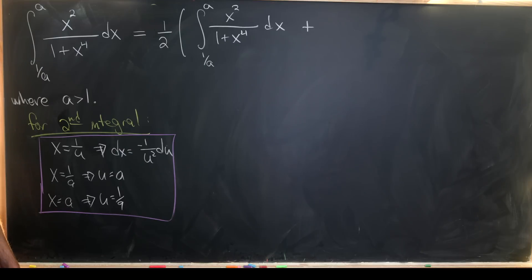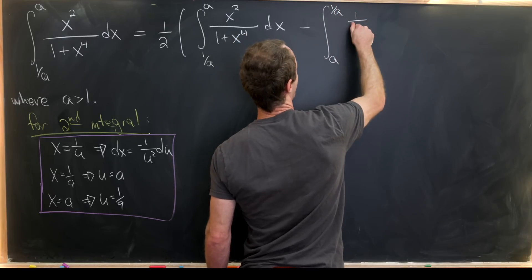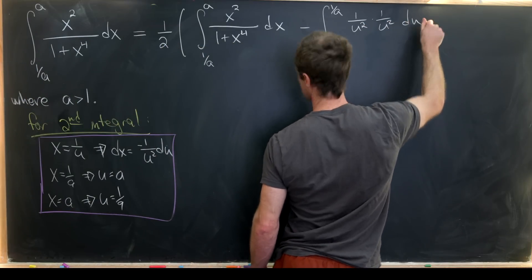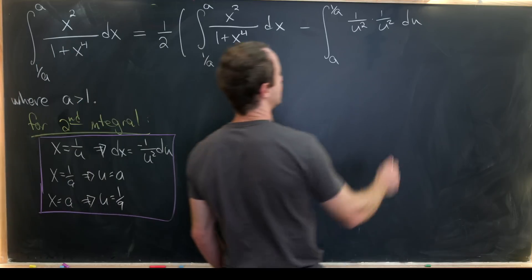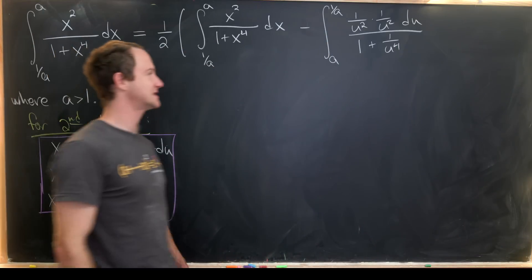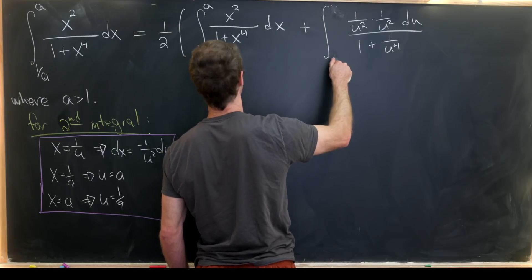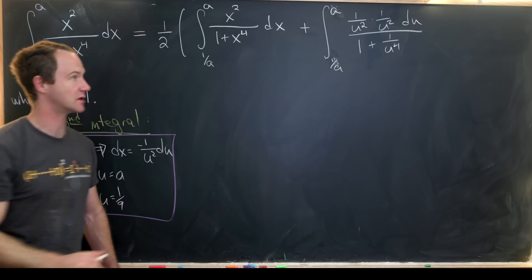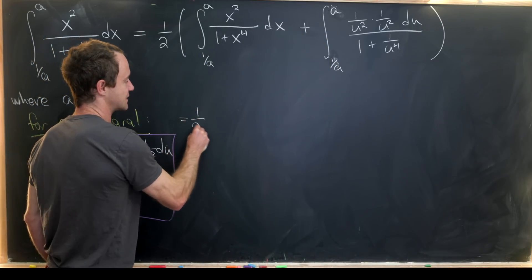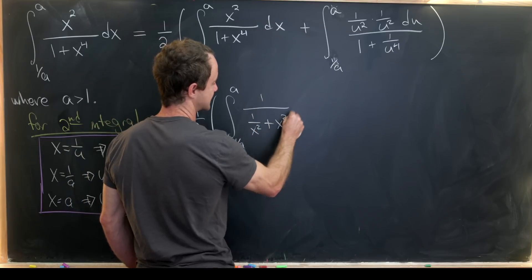So let's see what we're left with. The plus turns to a minus and we have the integral from a to 1 over a, with 1 over u squared from the substitution and another 1 over u squared du from the dx term, and in the denominator 1 plus 1 over u to the fourth. We then switch the bounds of integration at the cost of a minus sign, going from 1 over a up to a. Now I'll rewrite the first integral as the integral from 1 over a to a of 1 over (1 over x squared plus x squared) dx, simply by multiplying numerator and denominator by 1 over x squared.